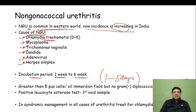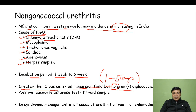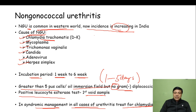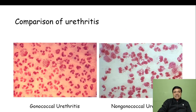In non-gonococcal urethritis, the incubation period is very long — from one week to six weeks. The smear shows greater than five pus cells per oil immersion field but no gram-negative diplococci. Positive leukocyte esterase test in the first-void urine sample. In syndromic management, all cases of urethritis should be treated for chlamydia also — any urethritis you treat for both gonococcal and non-gonococcal.